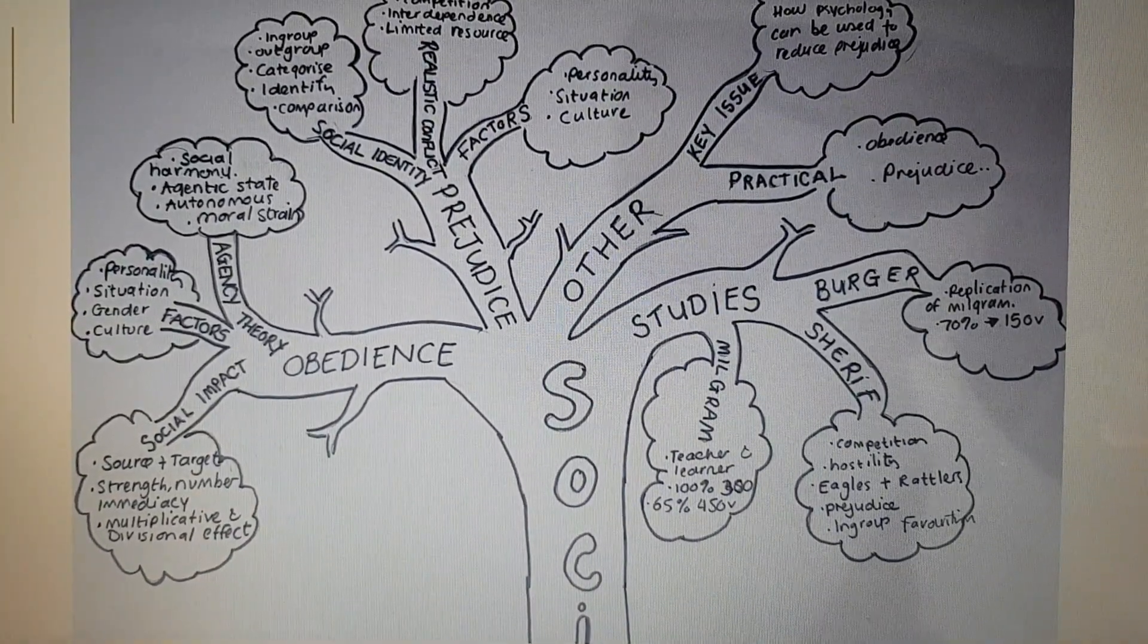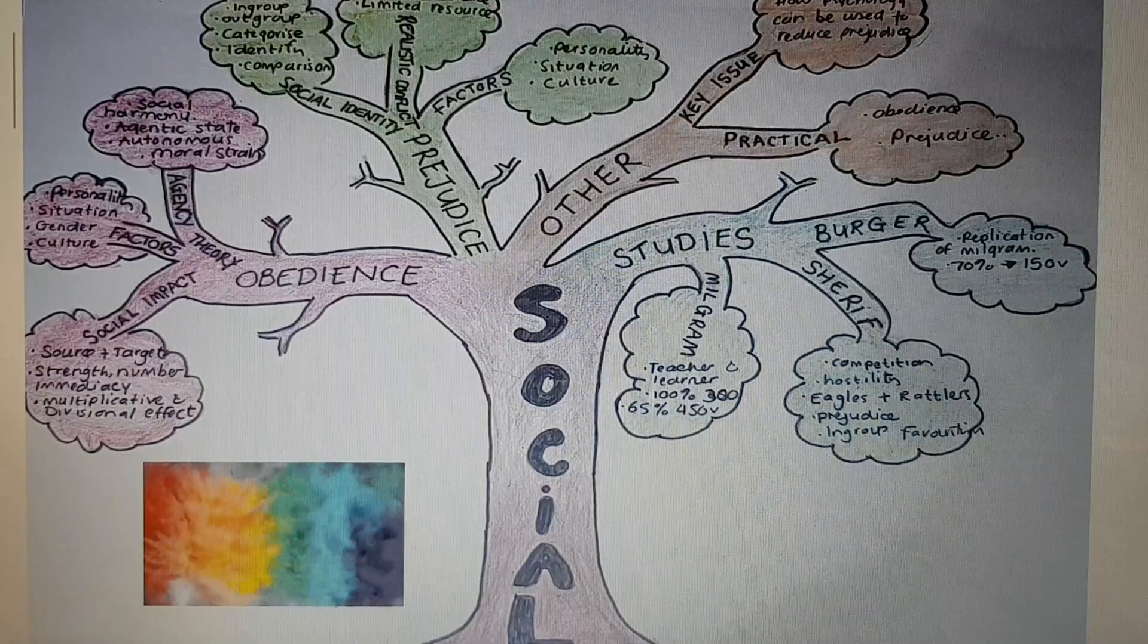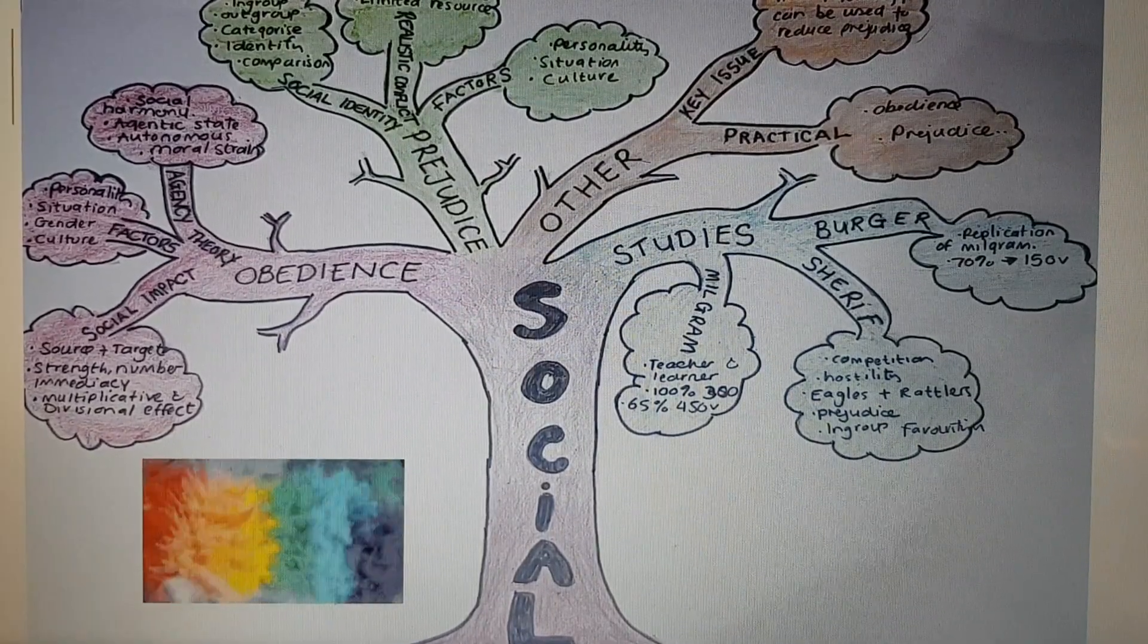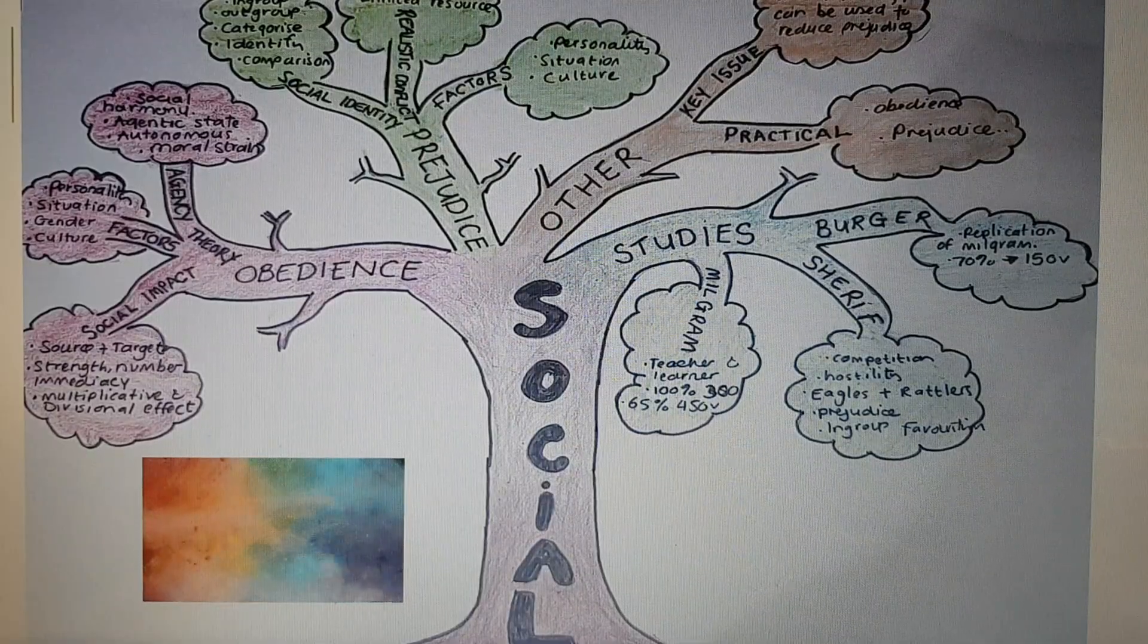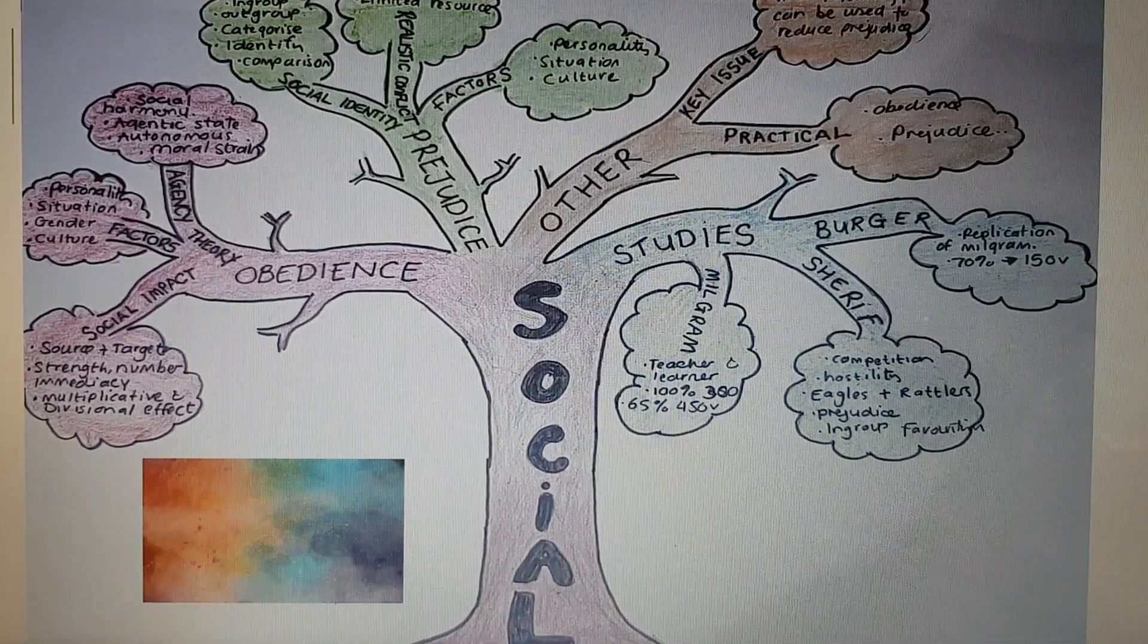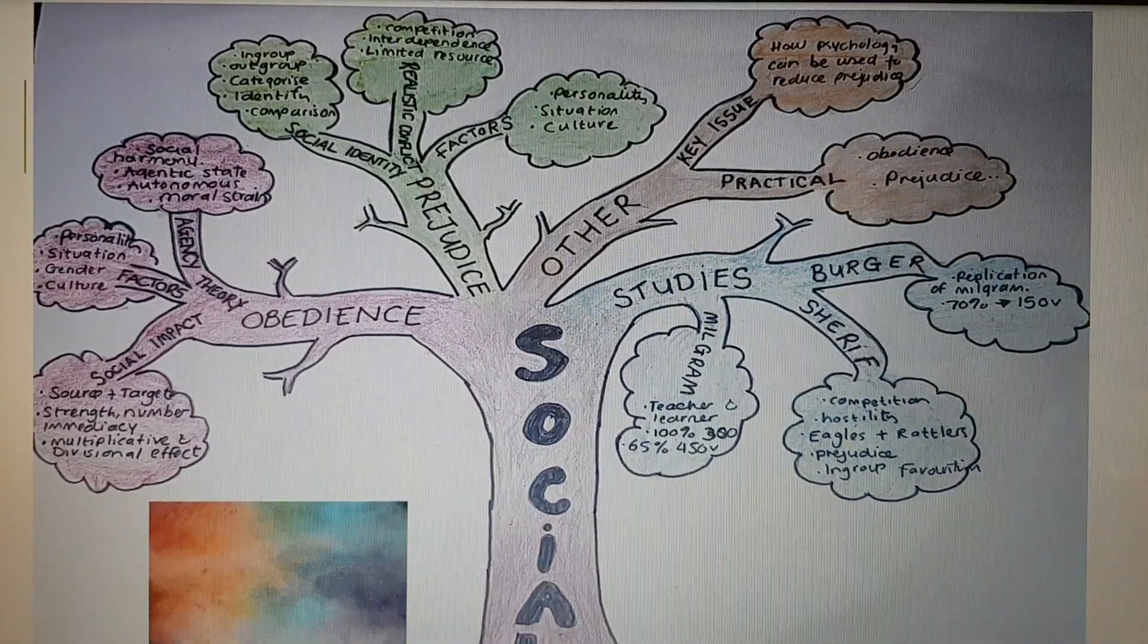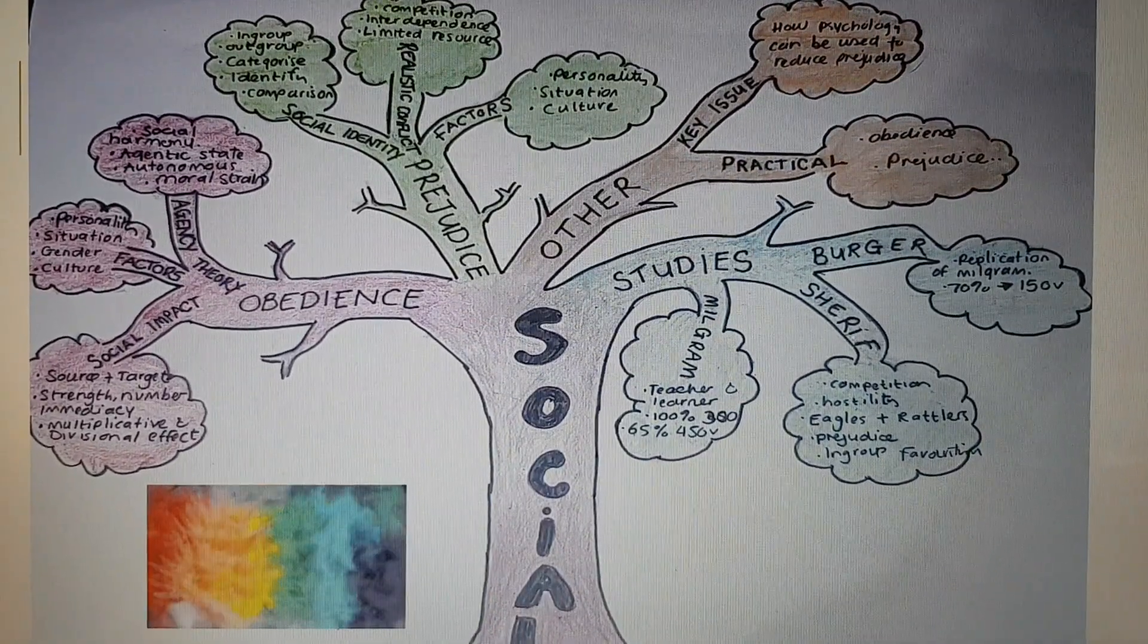Okay, so there you go. And then all I've done is added some color, because color is really important in revision. There is plenty of research out there which has been conducted proving that color does aid revision or does aid memory. So red I've got obedience, prejudice is green, other is orange, and other studies are blue. So when I am revising and when I'm in the exam, I will be able to remember the colors as well. So that's really how to create an effective mind map.